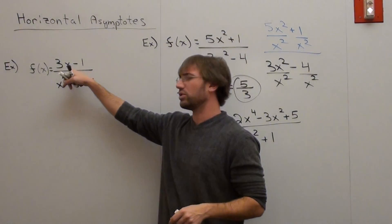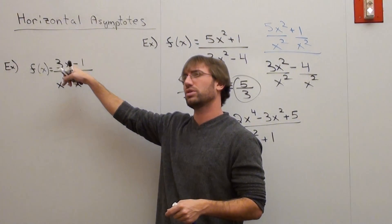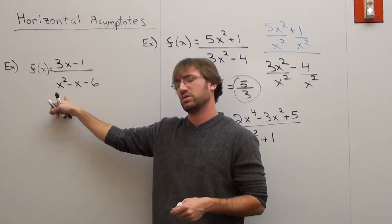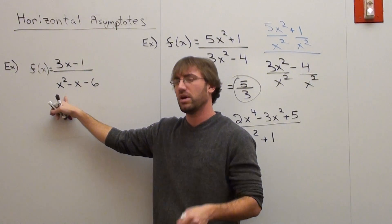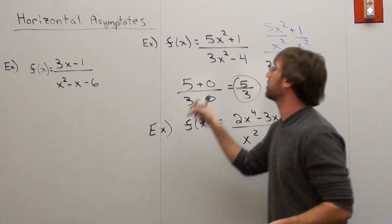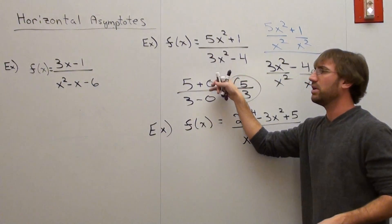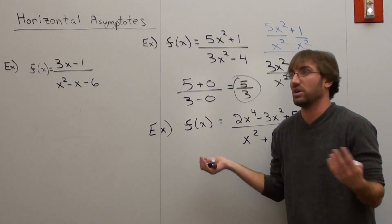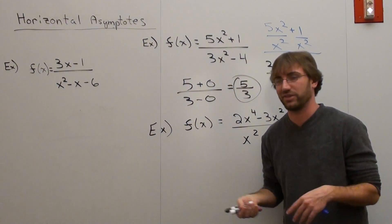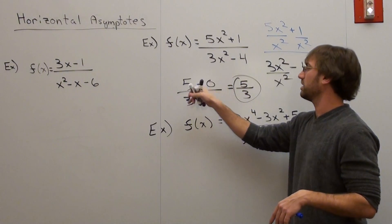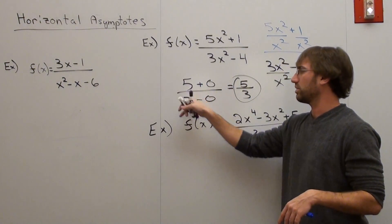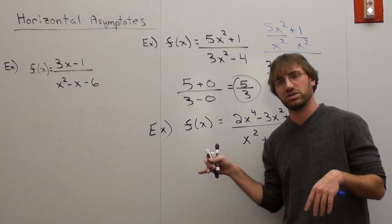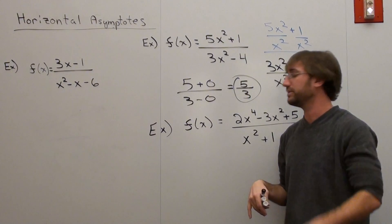So if the degree of the numerator is smaller than the degree of the denominator, the horizontal asymptote is 0. If the degrees are the same, you divide by x squared — or whatever variable you're using — and whatever that constant turns out to be is the horizontal asymptote.